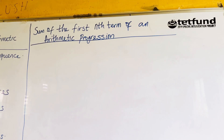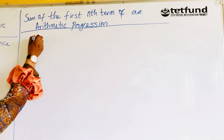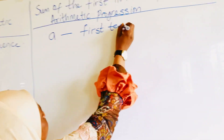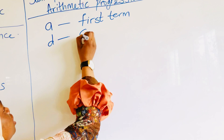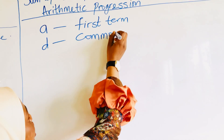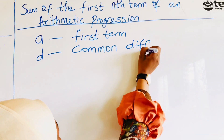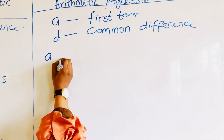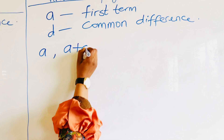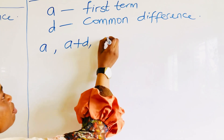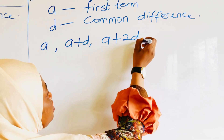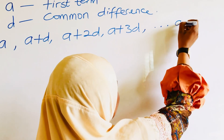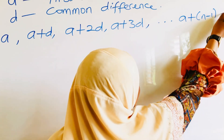Now let's look at the sum of the first n terms of an arithmetic progression. Suppose the first term is a and d is the common difference. The list of that sequence will be: a, then the second term is a plus d, the third term is a plus 2d, then a plus 3d, and so on, up to a plus (n minus 1)d, which is the nth term.